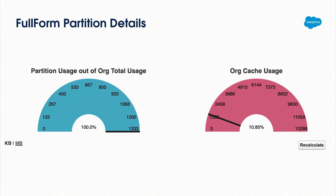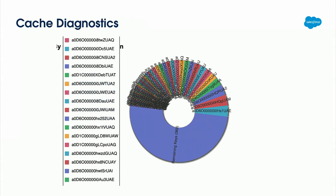If you click into a specific partition, this is what you would see. In this scenario, we only have one partition so it's utilizing all of it, and this is our metric for how much of the org cache we're currently using. There's also a pie chart breakdown of how your cache is being utilized — a little crazy looking, but this visualization is available.